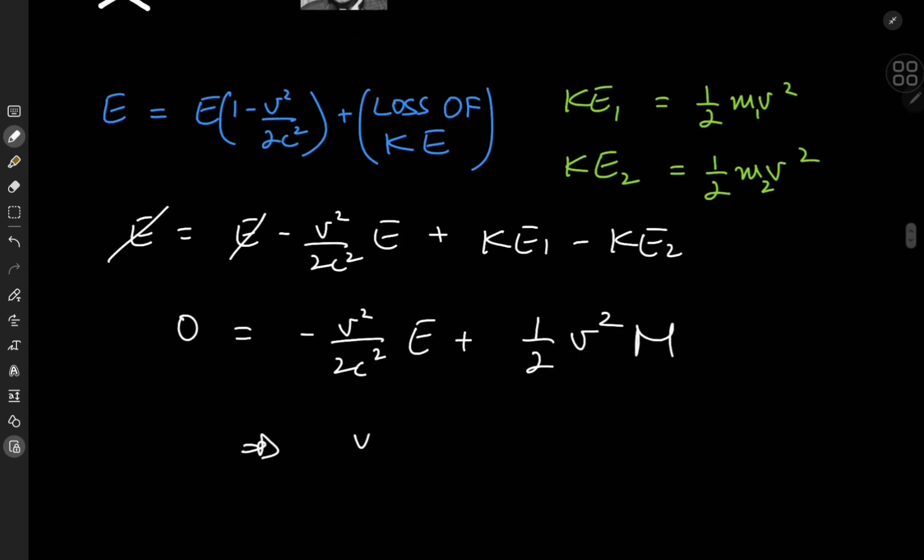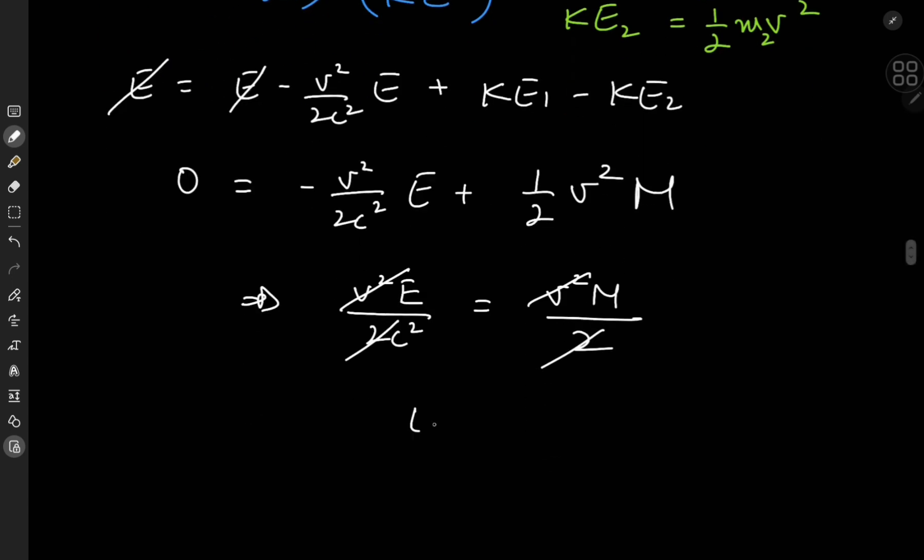So on rearranging we have v squared times E divided by 2c squared equal to v squared M divided by 2. So the 2's cancel out and so do the v squared terms and we have E by c squared equal to M,